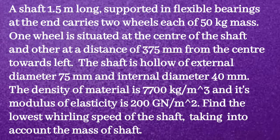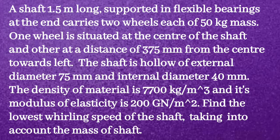Given problem: A shaft 1.5 meters long, supported in flexible bearings at the ends, carries two wheels each of 50 kg mass. One wheel is at the center of the shaft and the other is 375 mm from the center towards the left. The shaft is hollow with external diameter 75 mm and internal diameter 40 mm. Density of material is 7700 kg/m³ and modulus of elasticity is 200 GN/m². Find the lowest whirling speed of the shaft taking into account the mass of the shaft.